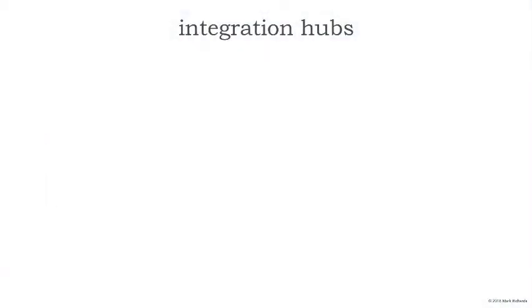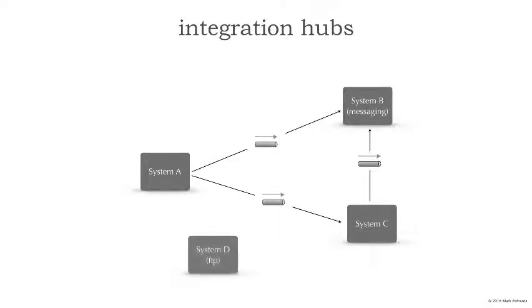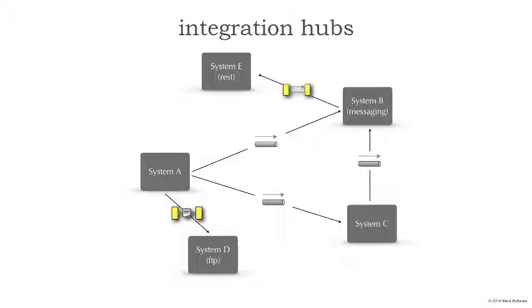I want to start by analyzing whether we need an integration hub and what they can really do for us. Let's suppose we have three systems — system A and system B that communicate through messaging, and system C that communicates through messaging. In this particular case, we don't necessarily need an integration hub because this is fairly simple communications between three systems. However, systems tend to evolve. Let's say we have system D that requires FTP communication and system A has to communicate with it, then system E that's maybe external and requires REST. System B needs to communicate with that system, but so does system A, and we start to realize it's starting to look like a bit of a spaghetti mess.